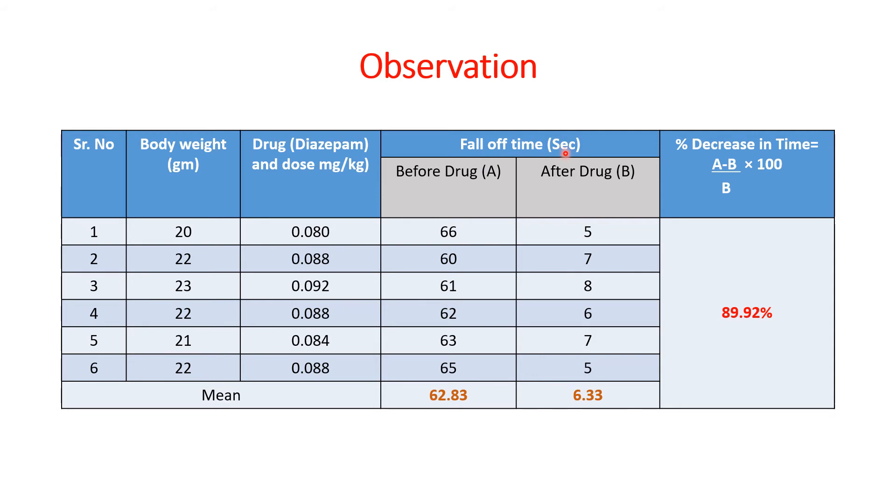Before giving the diazepam, the animal fall off time is 66 seconds, 60 seconds, 61 seconds, 62 seconds, 63 seconds, and 65 seconds. When we calculate the mean, it comes to 62.83 seconds.